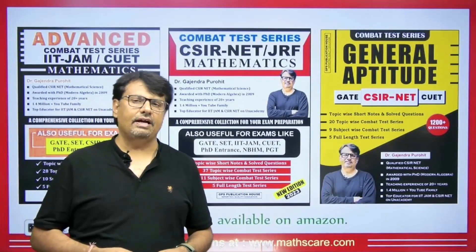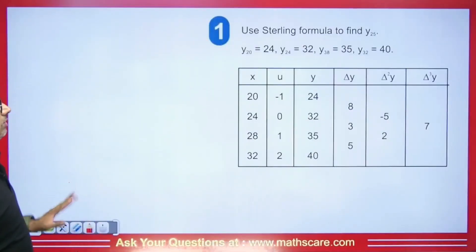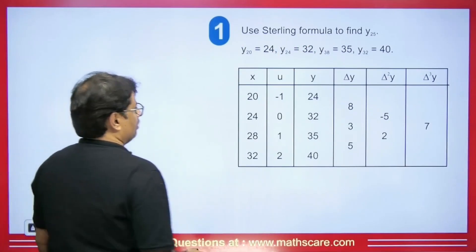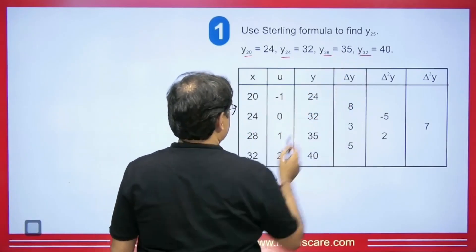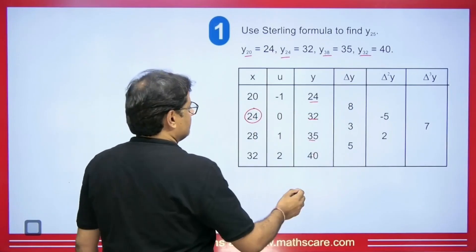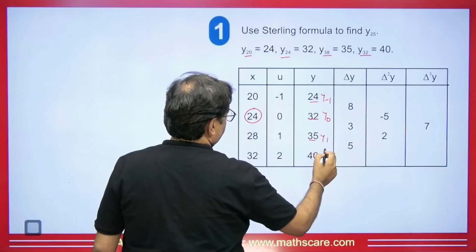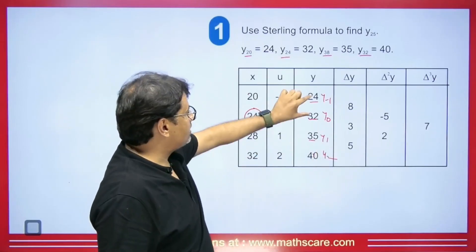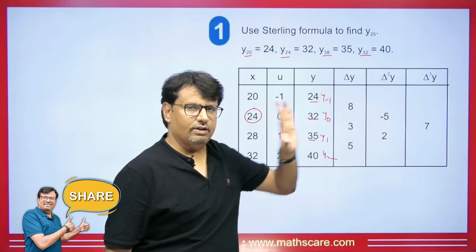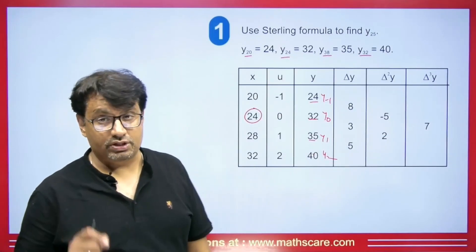If you are preparing for CSIR NET/GATE or IIT JAM exam, our books are available on Amazon and Flipkart. Next question: use the Sterling formula with the given values at x = 20, 24, 28, 32 to find the value at 25. The value 25 is closest to 24, so we take 24 as y₀, making the previous value y₋₁ and the next values y₁ and y₂.